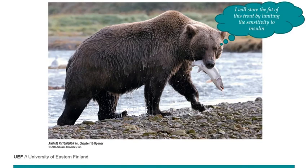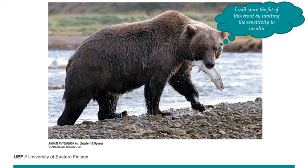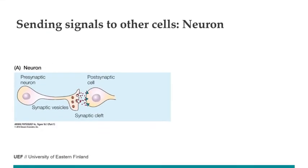The bear has already caught the salmon, and when it's eating the fish it will get fat as nutrition from the food, digest it, absorb it into circulation, and store the fat in fat cells. Because this bear is going into hibernation, it will need a lot of these fat stores. That's why it makes these fat cells insensitive to insulin. So you can modulate body functions either by hormonal control or by modulating the sensitivity of the receptors.